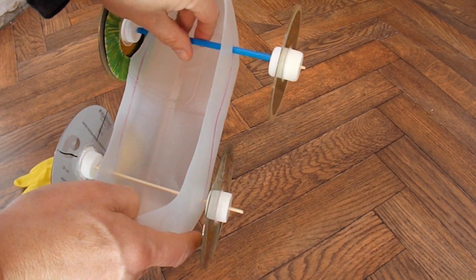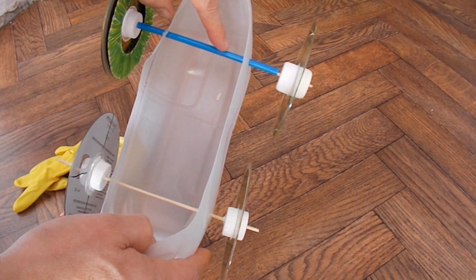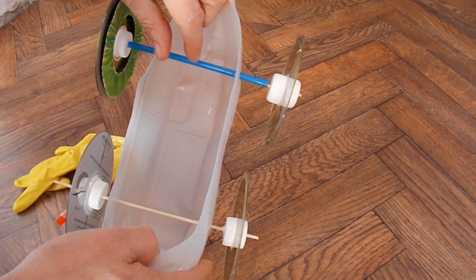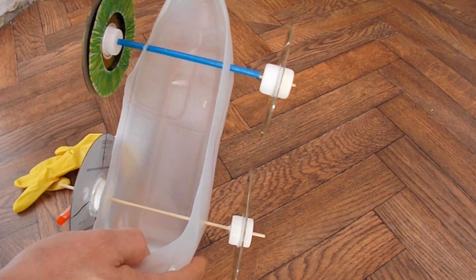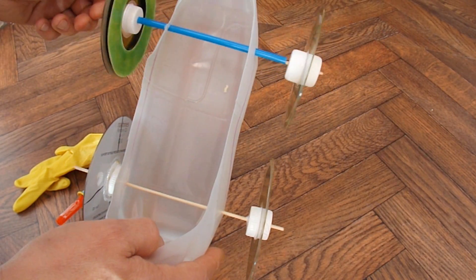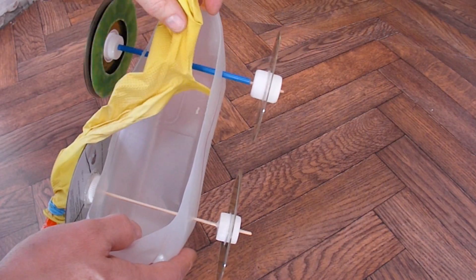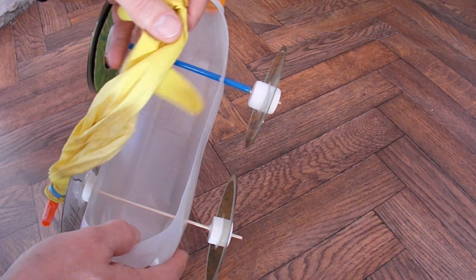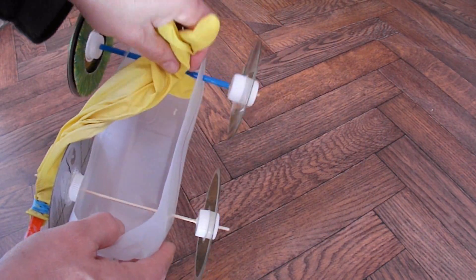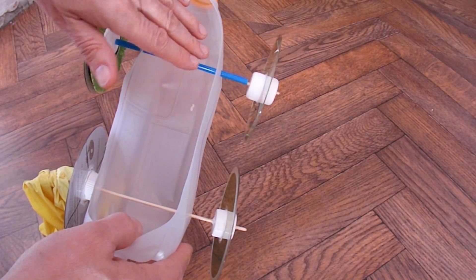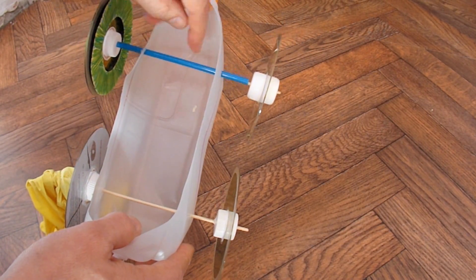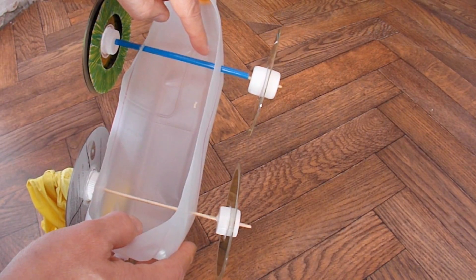The other thing I did was I put a straw through the car to act as the tube for the axle, just so that when the balloon—or the rubber glove in this case—lays in the car, it doesn't rub against the actual axle, which slows it down.